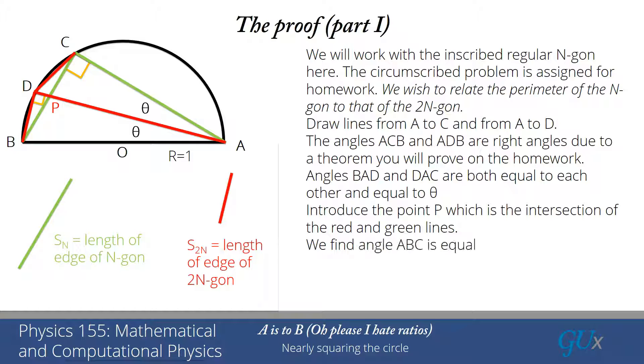Because the red line from A to D bisects the angle BAC, that tells us that each of those angles in those smaller triangles is equal to theta. Now we're going to introduce the point P, which lies on the intersection between the red and the green lines. And now we're going to take a look at some of these other angles.